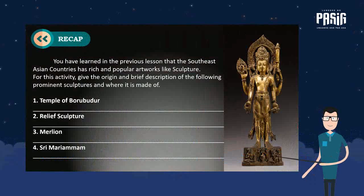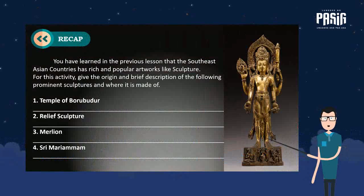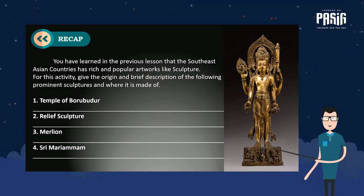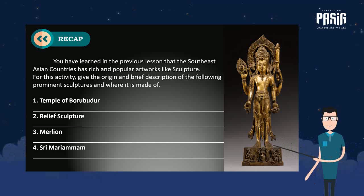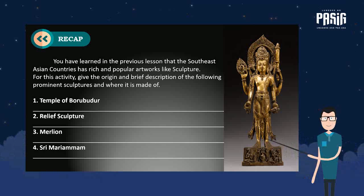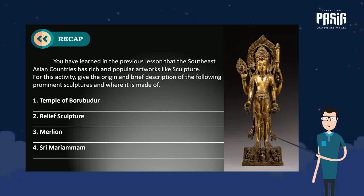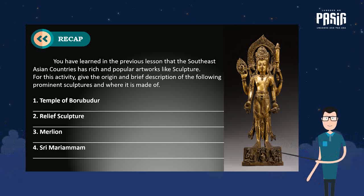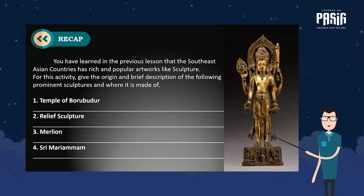For our next exercise, let's measure your learnings and skill in understanding the previous lesson. You have learned that Southeast Asian countries have rich and popular artworks like sculpture. For this activity, give the origin and brief description of the following prominent sculptures and what they are made of: Number 1, Temple of Borobudur; Number 2, Relief Sculpture; Number 3, Merlion; Number 4, Sri Mariamam.